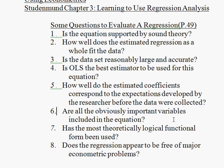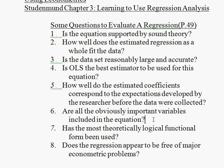Number six: are all the obviously important variables included in the equation? This is one of the most important questions. As we'll learn later in the course, if you leave out an important explanatory variable that should explain the dependent variable, in most cases it's going to make all your results suspect. So you really don't want to leave out an important variable.